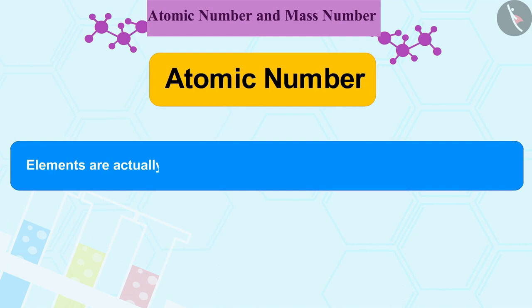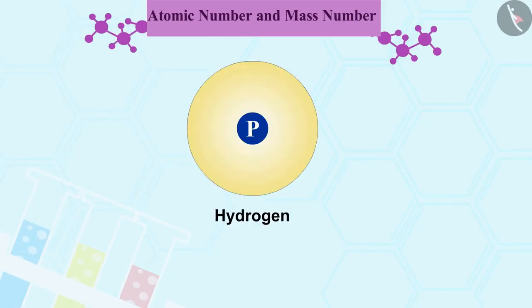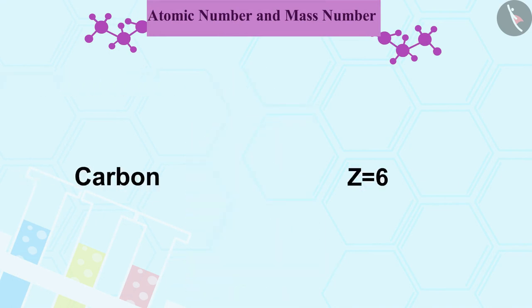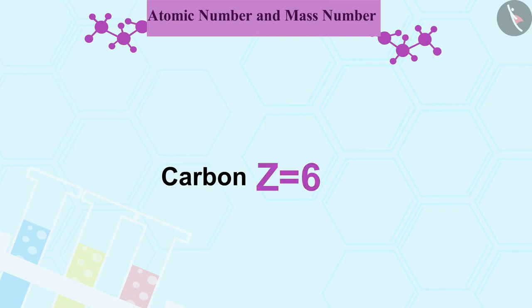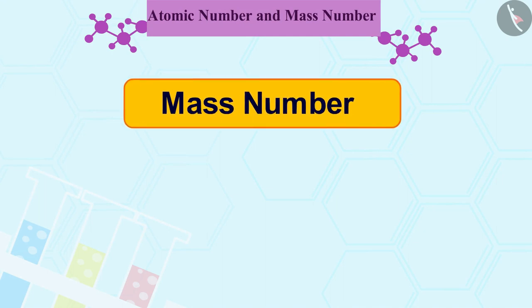In fact, elements are actually defined by the number of protons present in their atom. For example, Z equal to 1 for hydrogen because the nucleus of a hydrogen atom has only one proton. Similarly, Z equal to 6 for carbon. Let us go ahead and see what is a mass number.